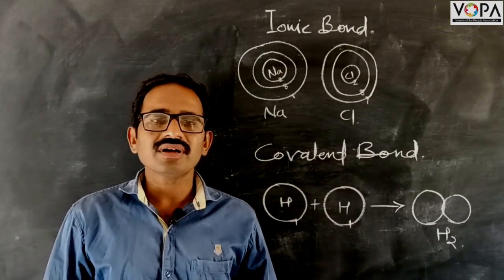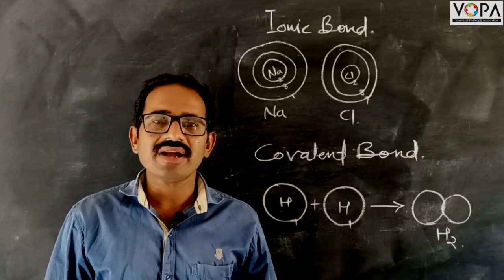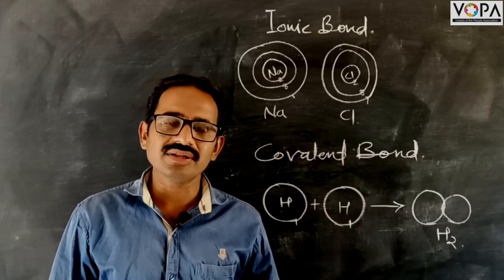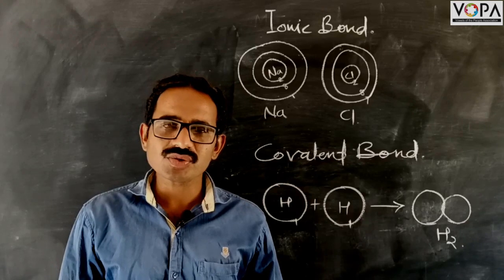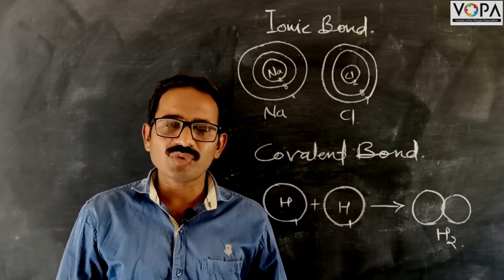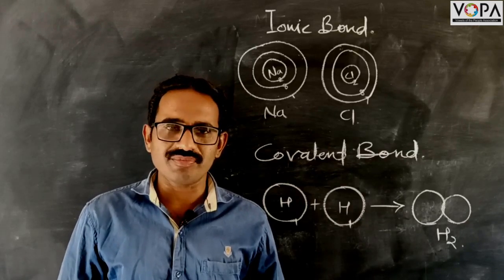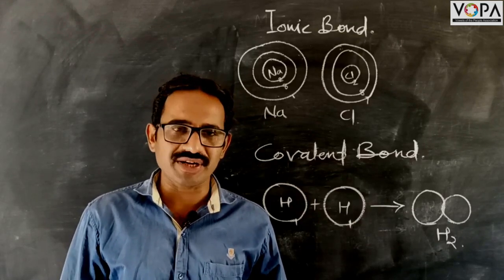You must have seen the electronic configuration and valency relation in the chapter inside the atom. We know that noble gases do not form bonds because their octet or duplet is completed.